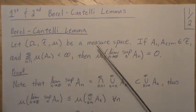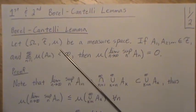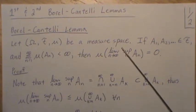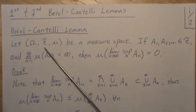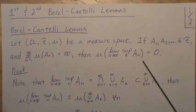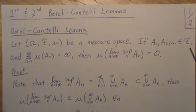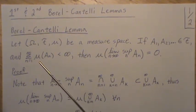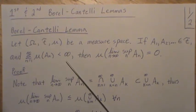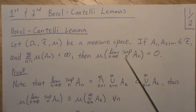So the Borel-Cantelli lemma is this. Let omega, F, and mu be a measure space. So that tells us that capital F here is a sigma field. And if a1, a2, ... are sets in F, and the sum of the measure of these sets is less than infinity, then the measure of the limit supremum of aN is equal to zero.